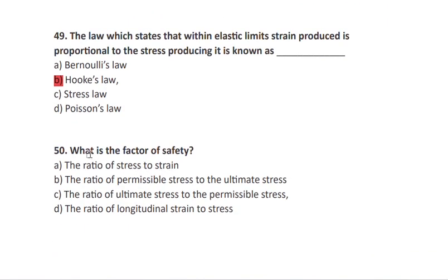Question 50: what is the factor of safety? It is the ratio of ultimate stress to permissible stress. When you divide the ultimate stress by the permissible stress you get the factor of safety.